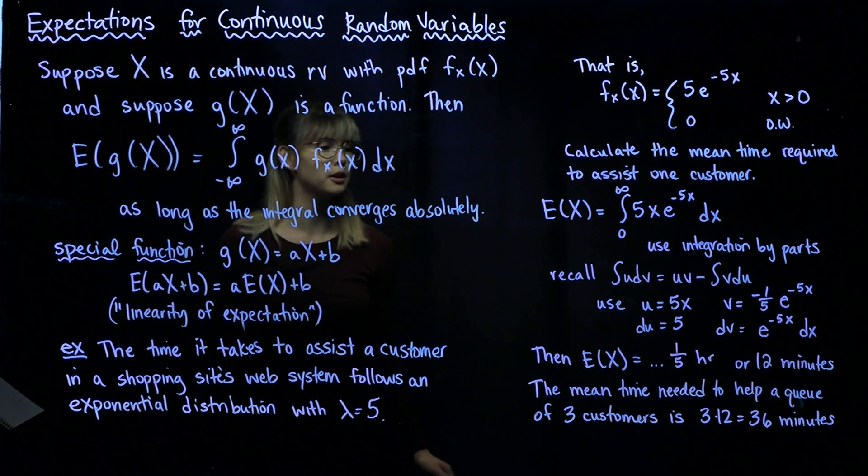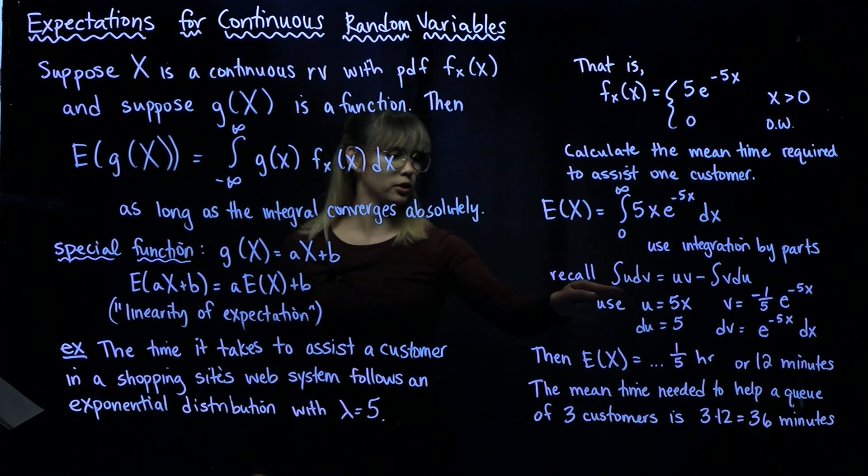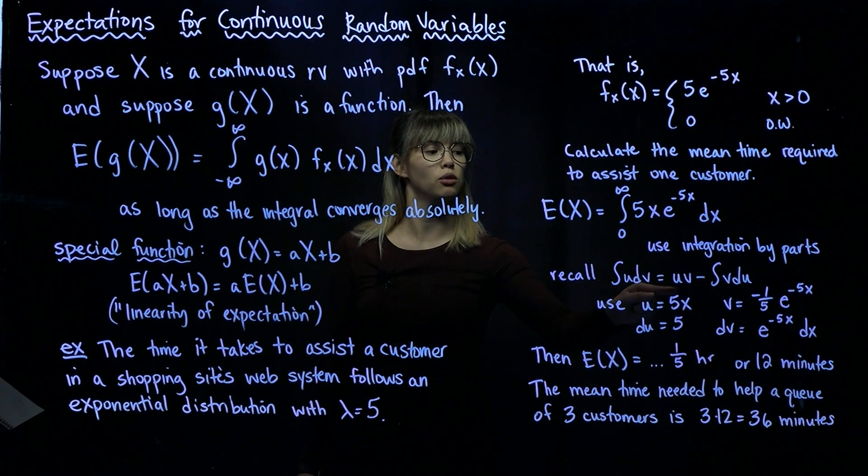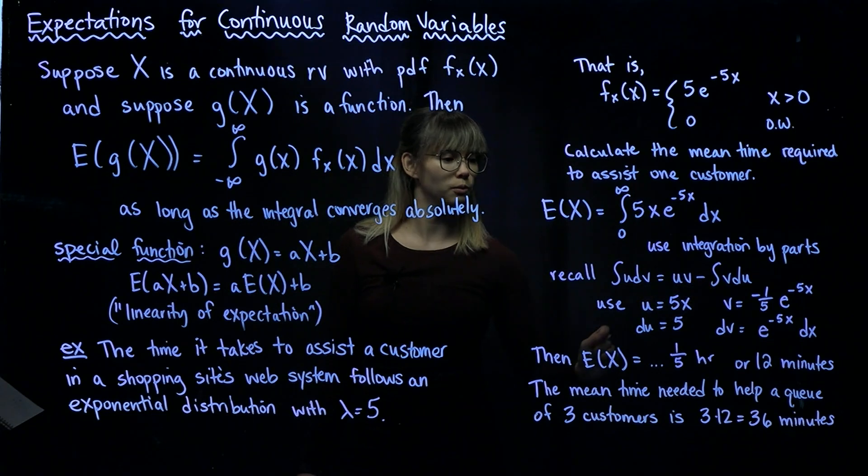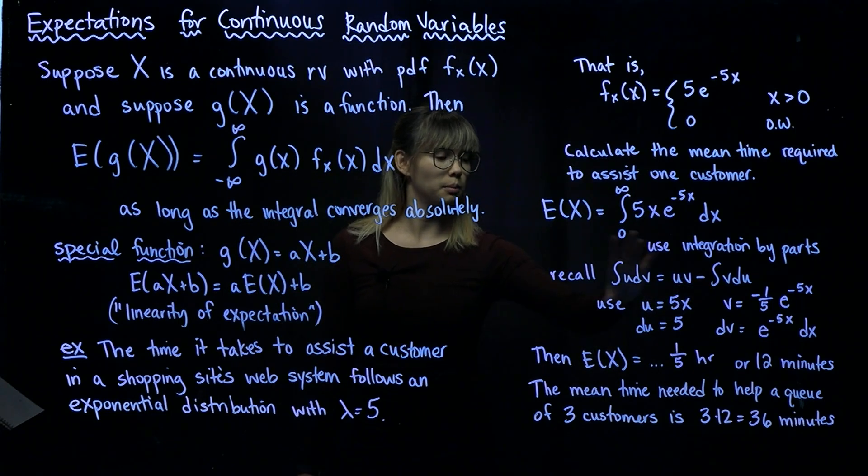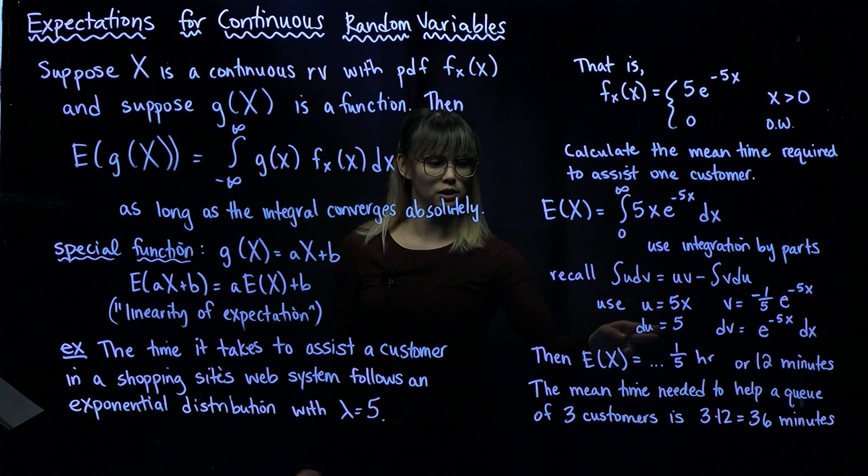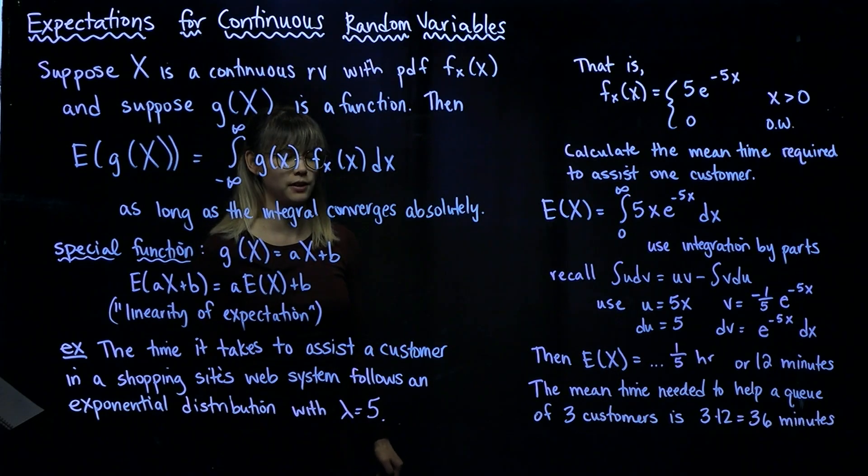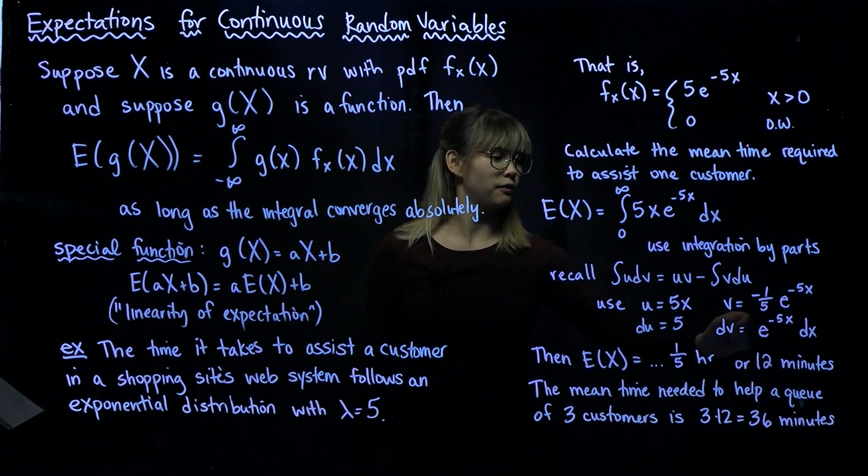If you don't remember how integration by parts works, if we have some integral u dv, then we can rewrite this as u times v minus the integral v du. We can apply this if we use u equals 5x, du equals 5, v equals negative 1/5 e to the negative 5x, and dv equals e to the negative 5x dx.